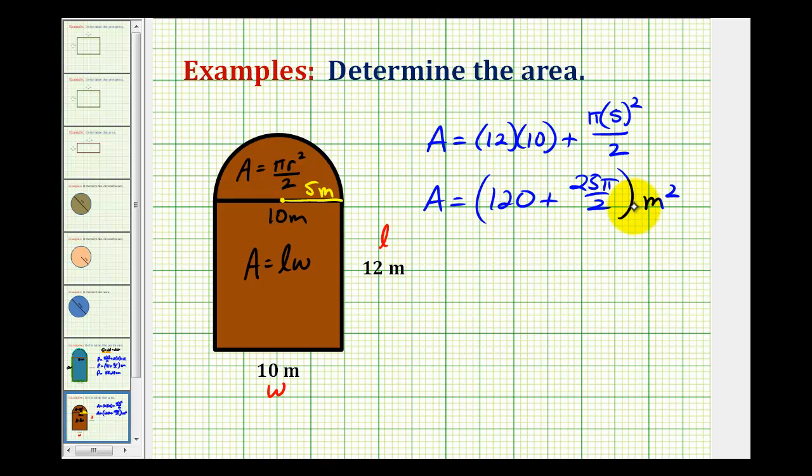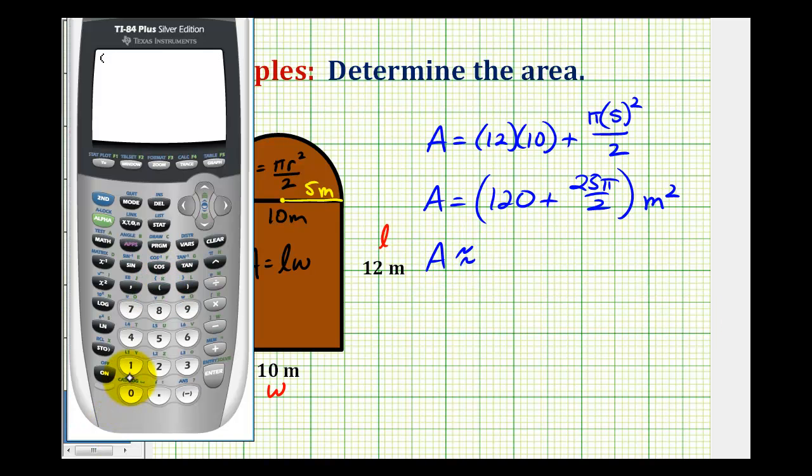So this would be the exact area of this figure. And now we'll use the pi key on the calculator to get an approximate value of this area to the nearest hundredth. So we'll have 120 plus numerator of 25 pi divided by two. So the area is approximately 159.27 square meters.